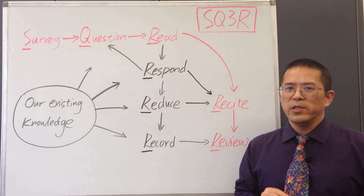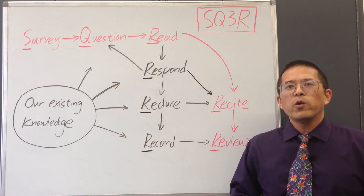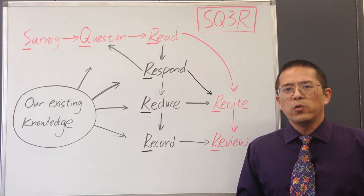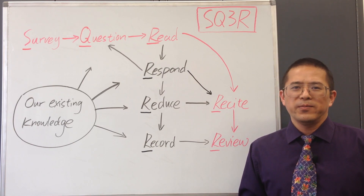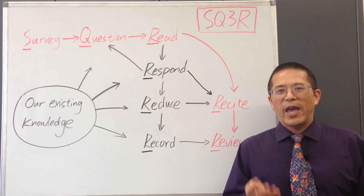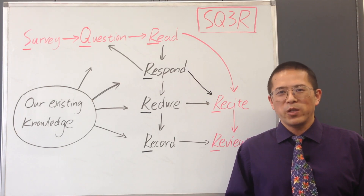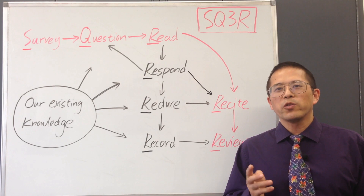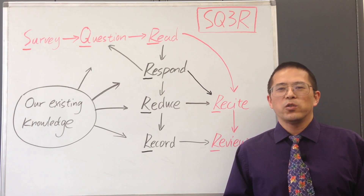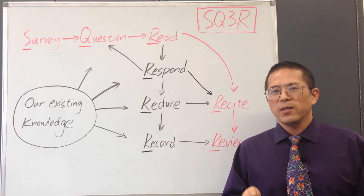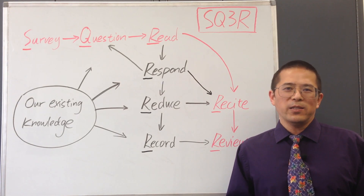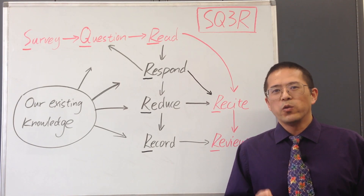The first step for deep reading is Survey. We want to obtain a general idea of what we are reading through a quick survey. We want to know how the information is organized and what we need to learn. The items we want to survey usually include the table of contents, headings, subheadings, preface, summary, or conclusions. We may also want to check out major graphs or images. The survey will allow us to obtain a general idea of what the main ideas are and how the chapters are organized. This will help us visualize and make sense of the text when we read through it later.